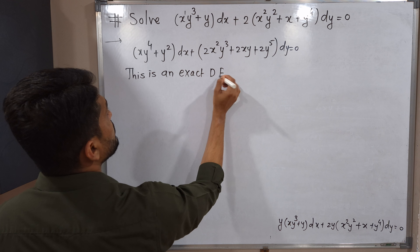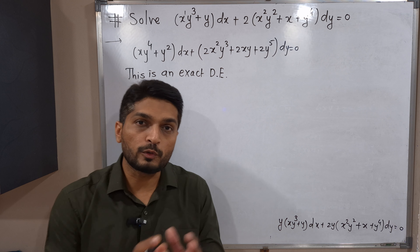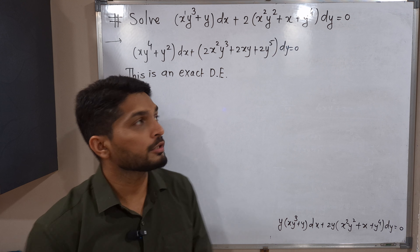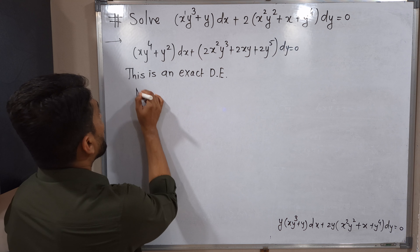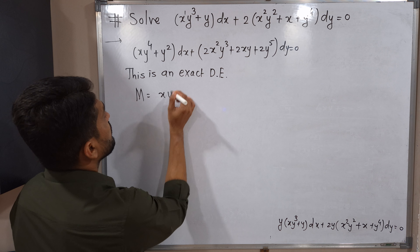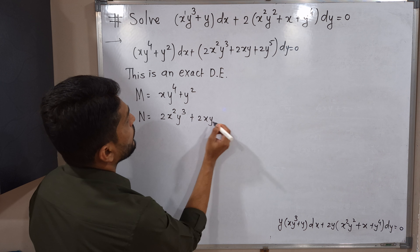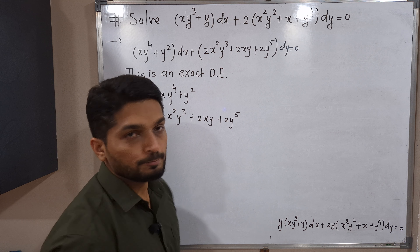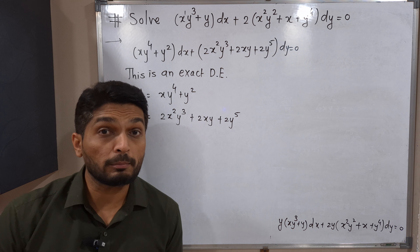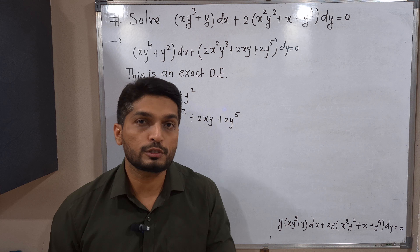This is now an exact differential equation. The new M = xy⁴ + y² and the new N = 2x²y³ + 2xy + 2y⁵. Now we need to find the solution of this exact equation.